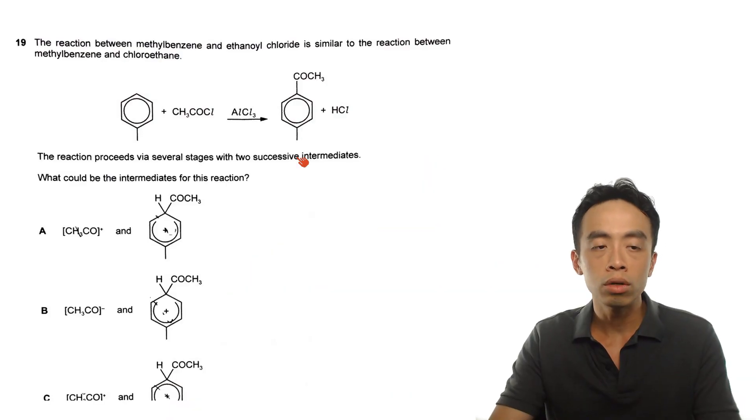Hi guys, this is Maverick Poirot, the chemistry guru. Now in this video, we want to go through the suggested solution for 2019 A-levels H2 chemistry, paper 1, question 19.